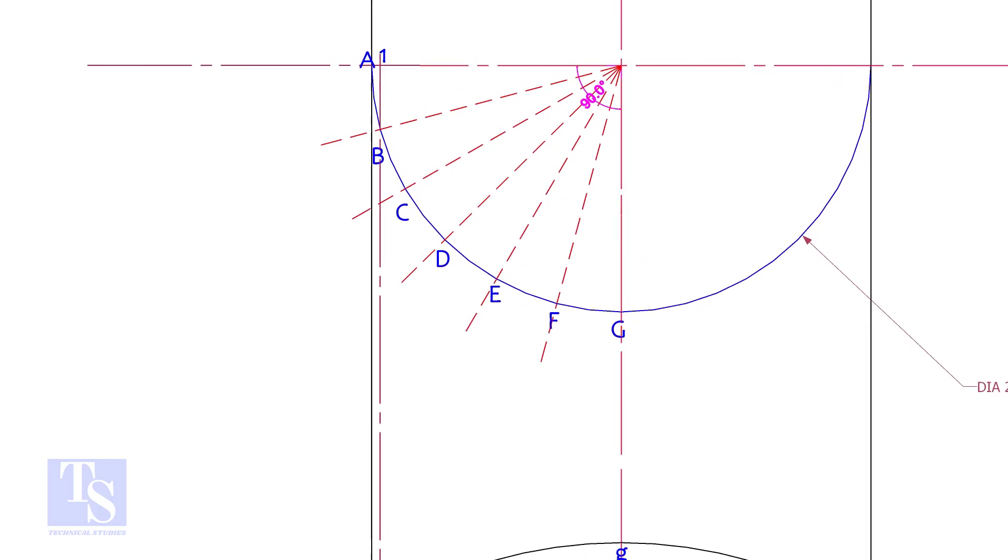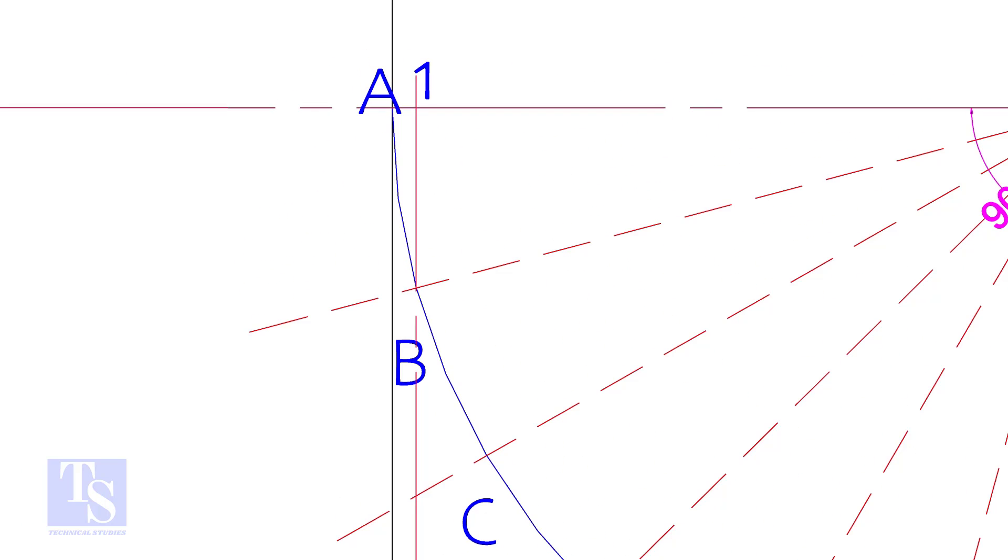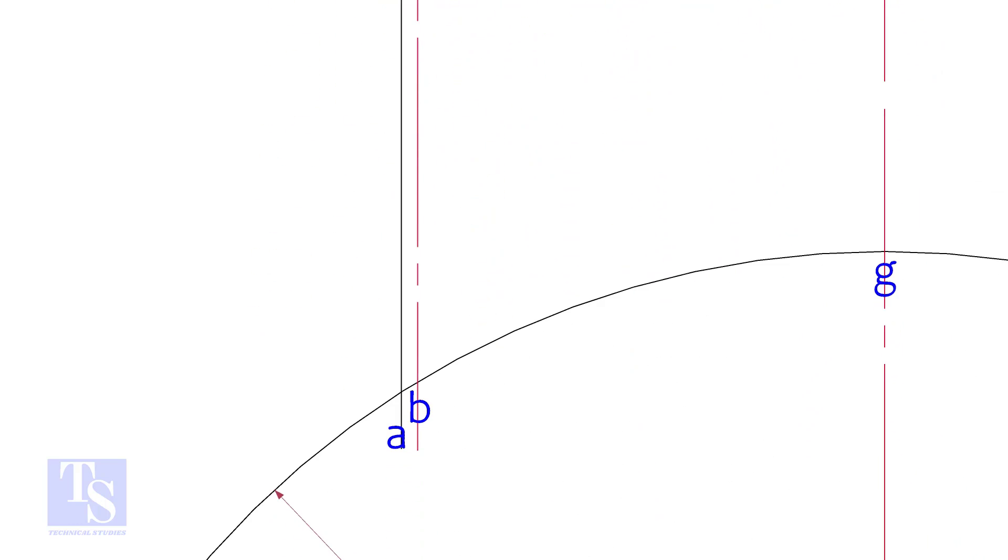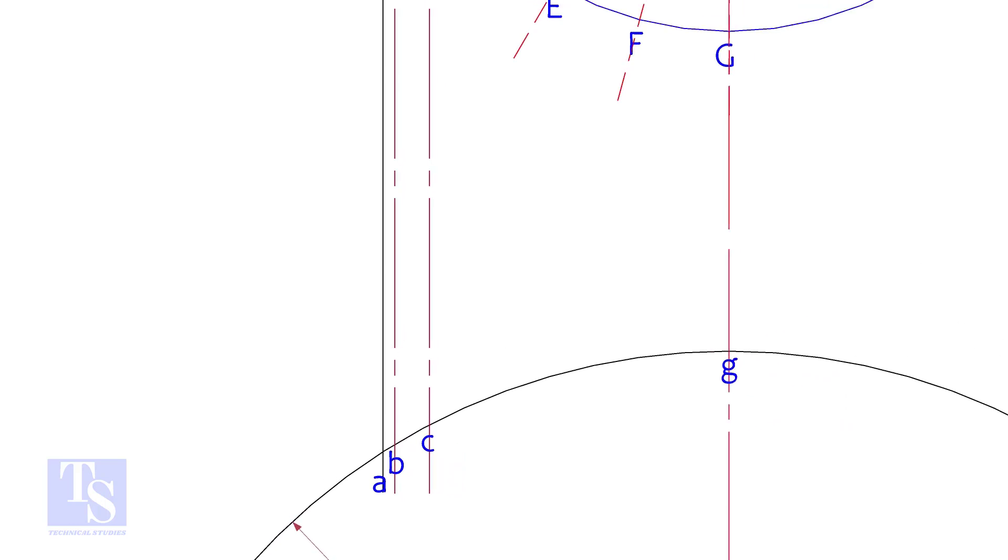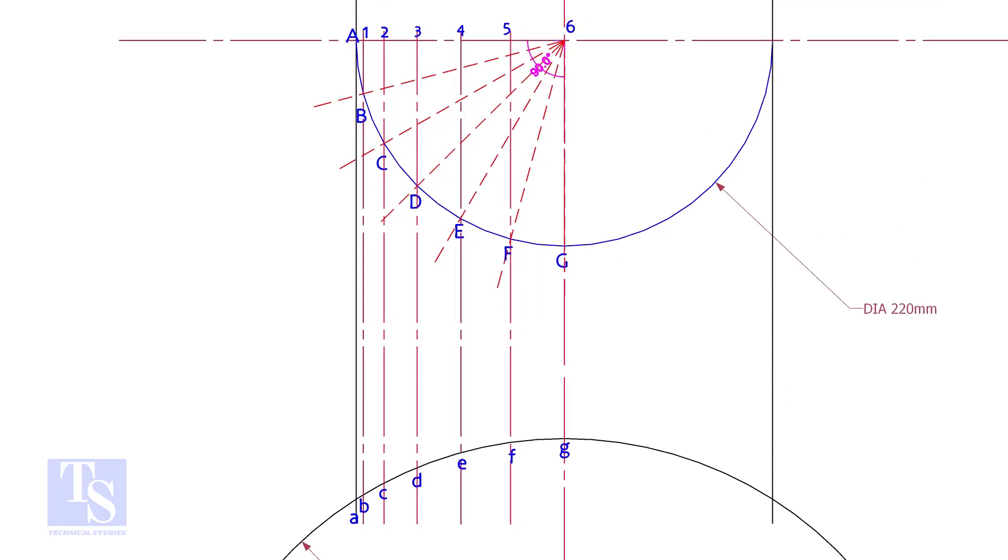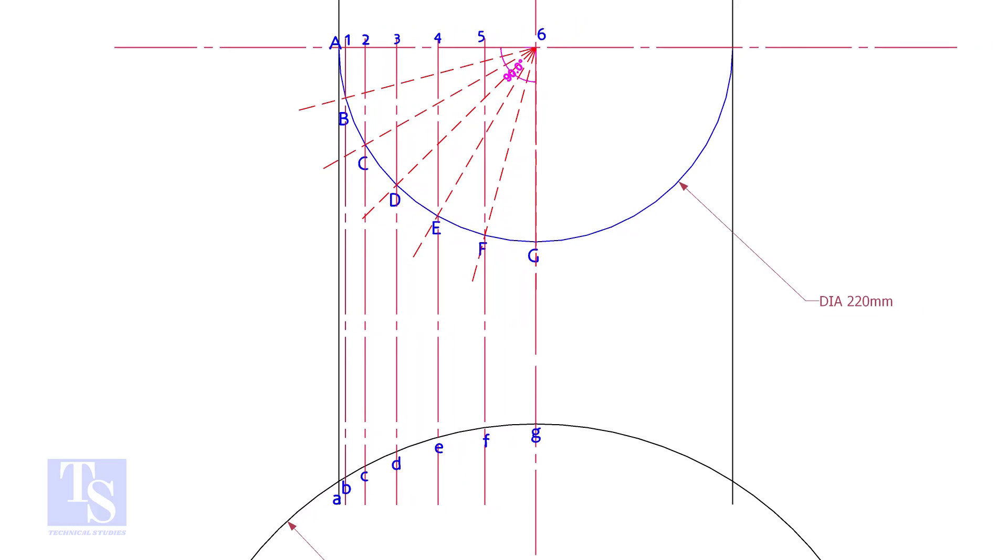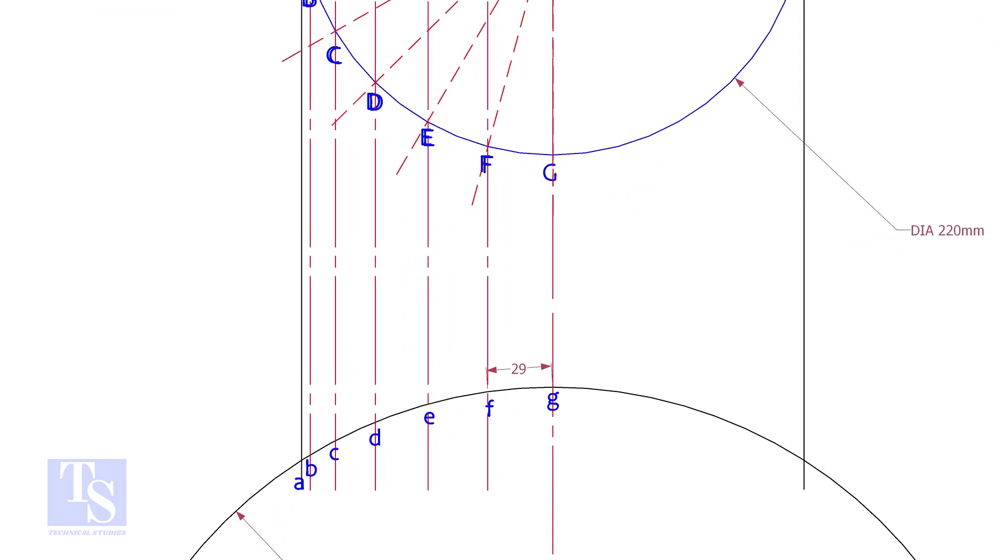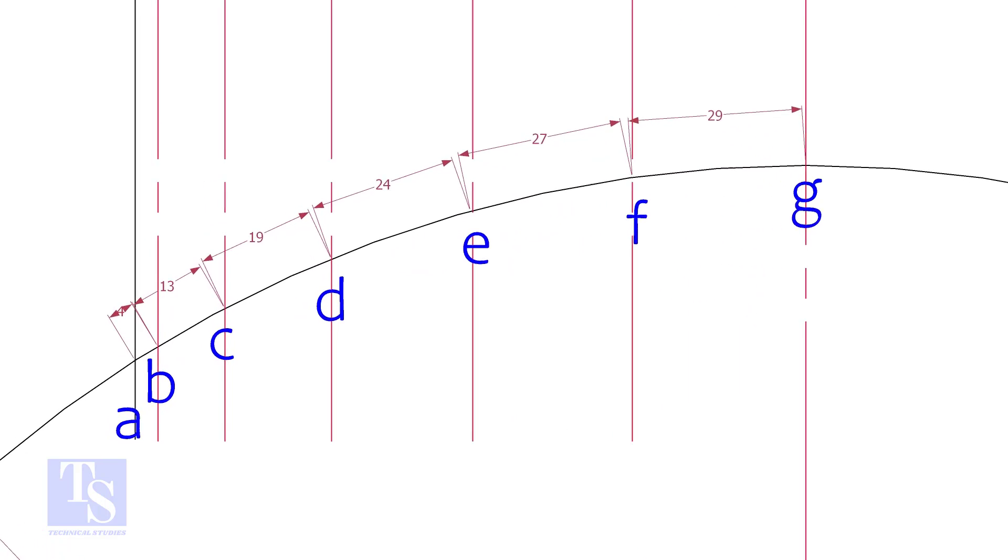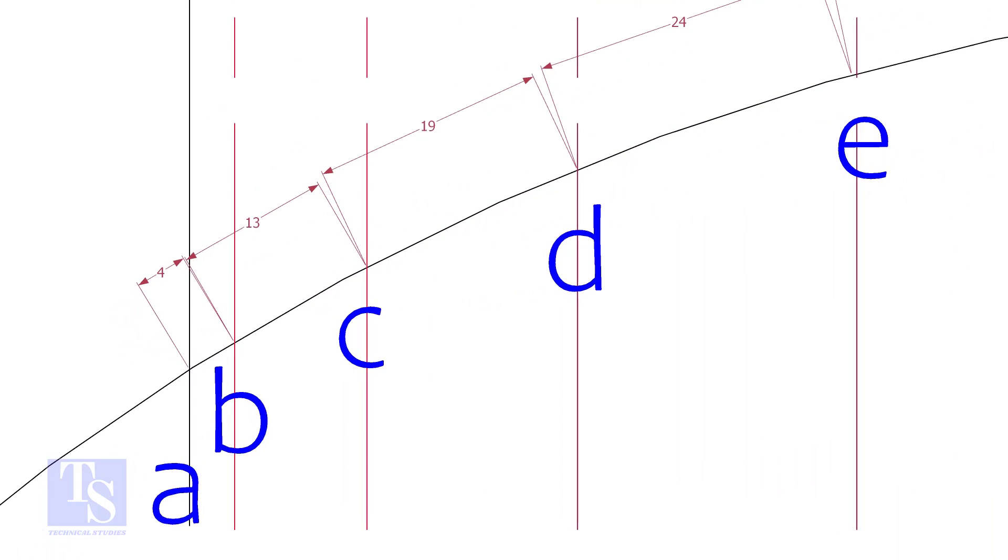Draw perpendicular lines BBCC etc. Measure and note down the arc lengths GF, FE etc. Don't measure the chord length. Hope you all know the difference between the arc length and the chord length.